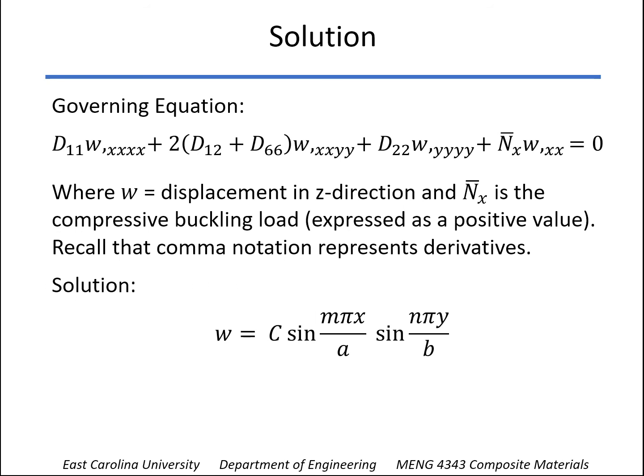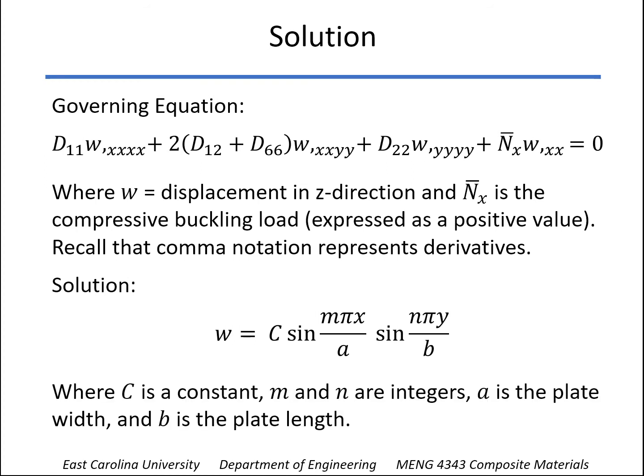But the solution to this equation is not terribly complicated. You can see that there's one term here that involves sine functions. And C, there's just some constant. You remember when you find the buckling load of a column, you don't know exactly what the deflection is. Because when that buckling load is reached, the deflection can increase without any additional load. So same kind of thing here. So the constant really is not important. M and N are integers. A is the width, and B is the length.